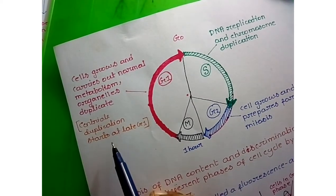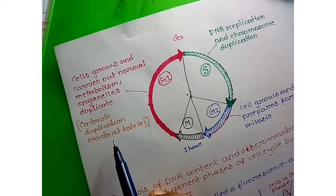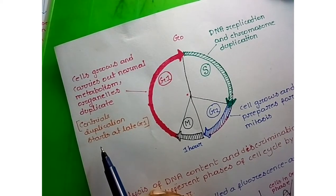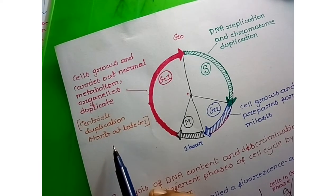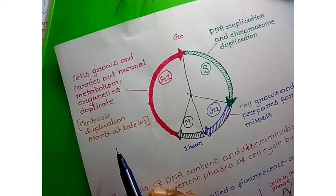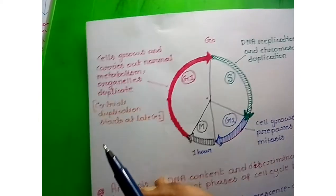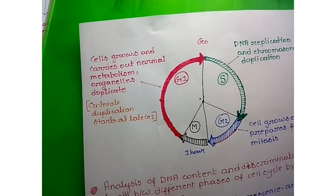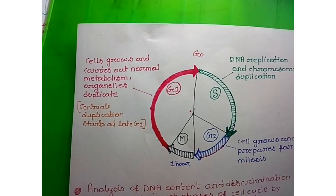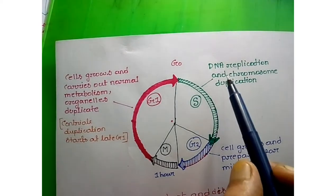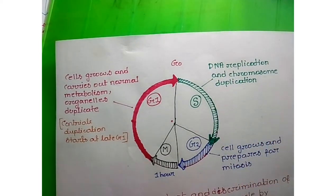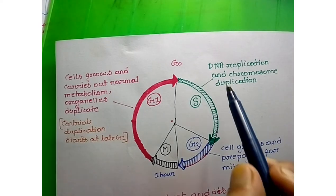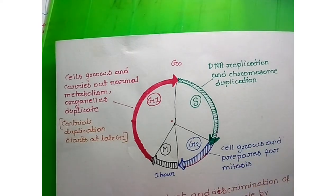The duplication of the centriole starts at the end of G2 and ultimately finishes in S phase. In S phase, DNA replication and chromosome duplication occur.